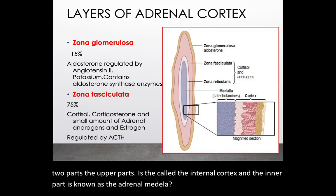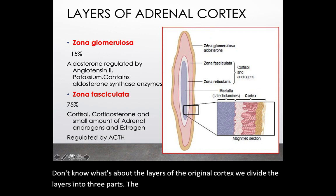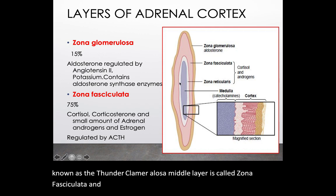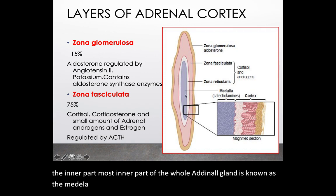The layers of the adrenal cortex are divided into three parts. The outermost layer is known as the zona glomerulosa, the middle layer is called zona fasciculata, and the innermost layer is known as zona reticularis. The innermost part of the whole adrenal gland is known as the medulla, which is different from the adrenal cortex.